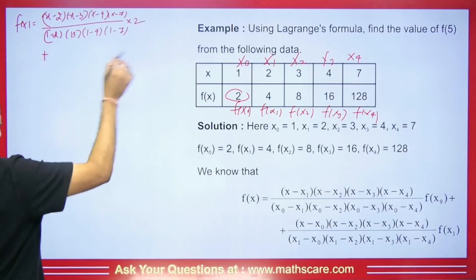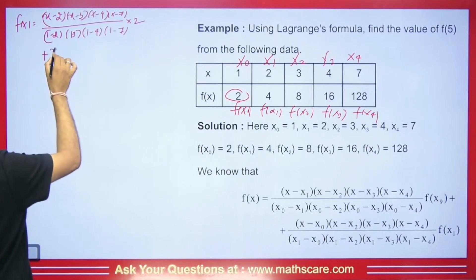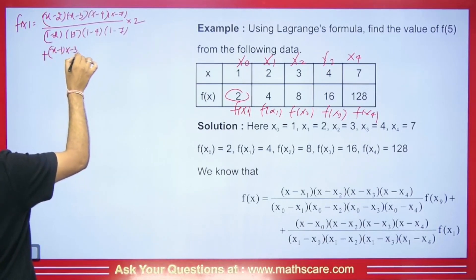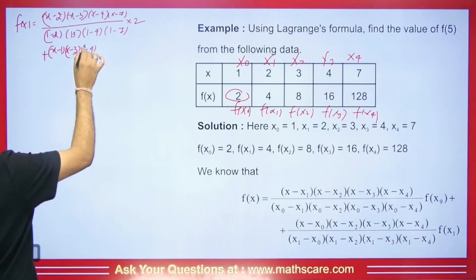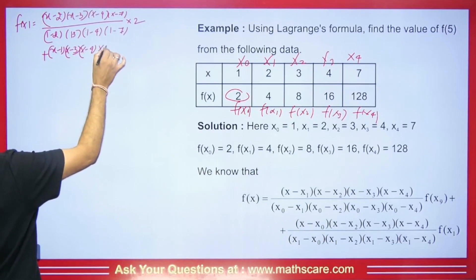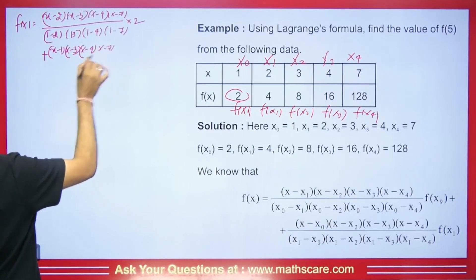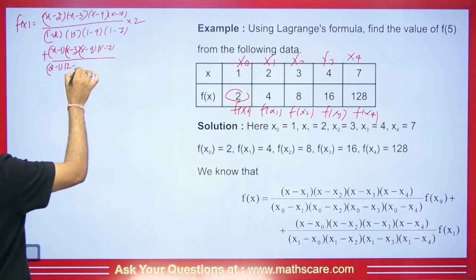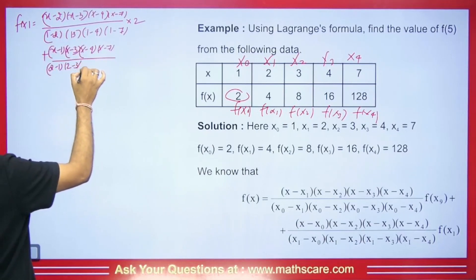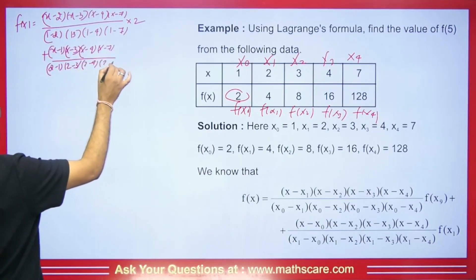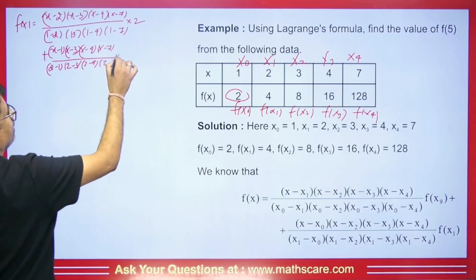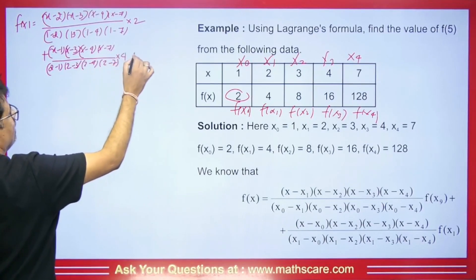Plus, for the next term, we hide x1=2. So we get (x−1)(x−3)(x−4)(x−7) divided by (2−1)(2−3)(2−4)(2−7), multiplied by its corresponding value which is 4.